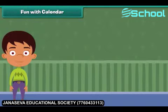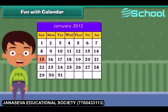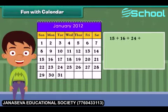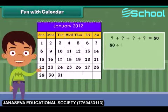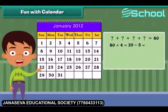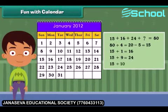Let's do some more fun with calendars. Suppose your friend chooses four numbers in a month — say 15, 16, 24, and 25 — and gives you the sum. How will you identify those four numbers knowing only the sum? It's easy: divide the sum by four, then subtract 5 to get the first number. For the other three numbers, add 1, 9, and 10 to the first number. You can try this with other numbers too!